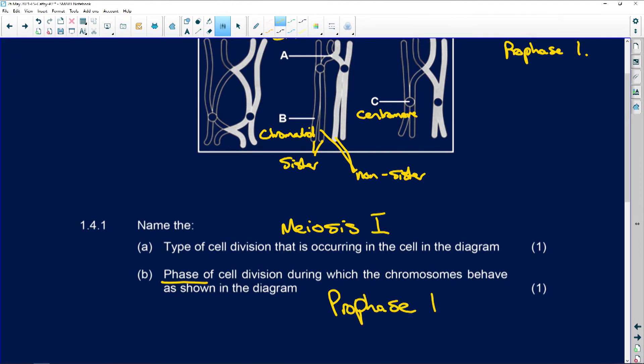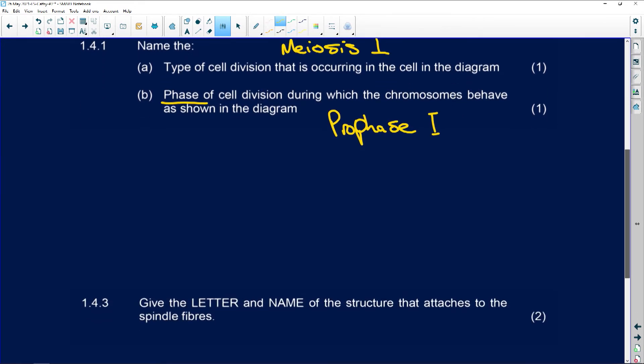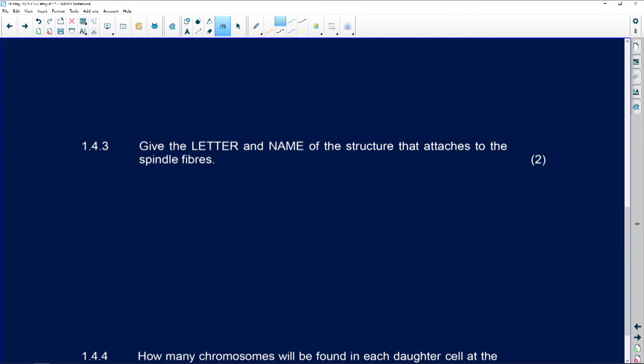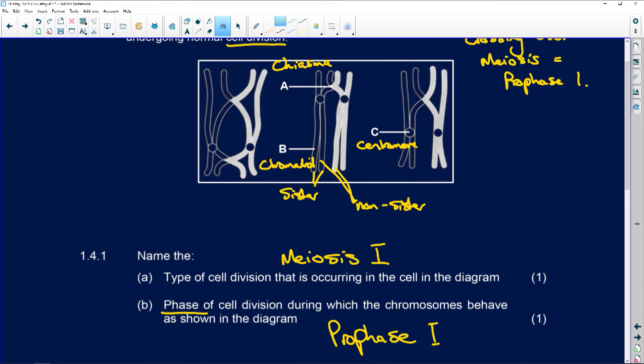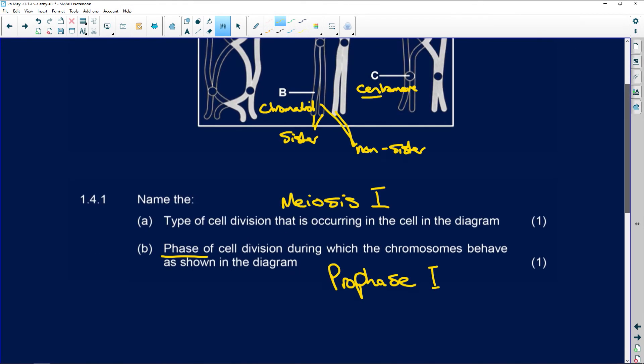Remember, there's no crossing over in prophase 2. Give the letter and the name of the structure that attaches to the spindle fibers. It's going to be C, the centromere.